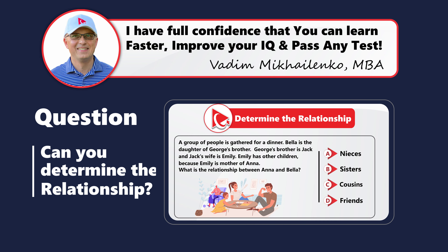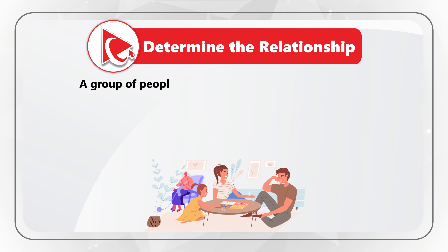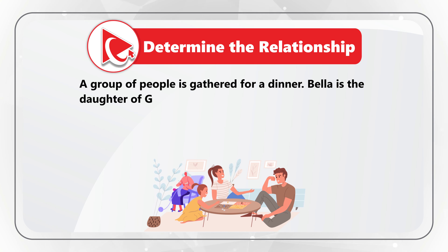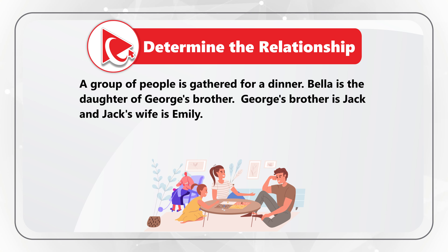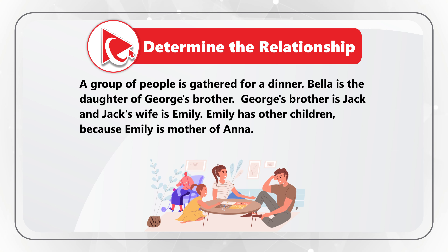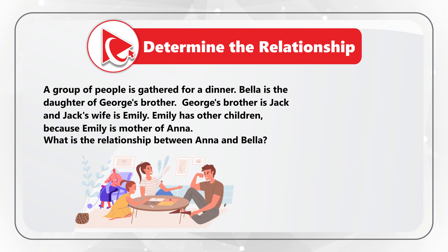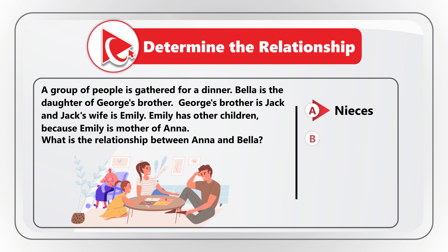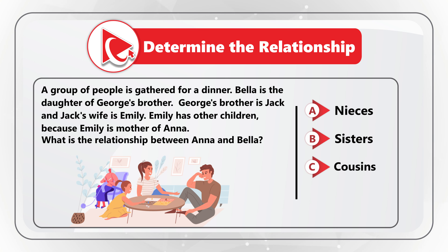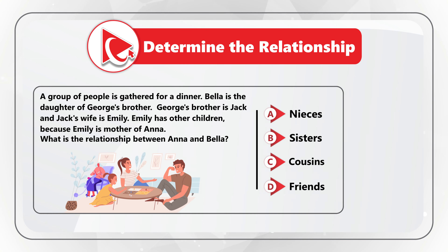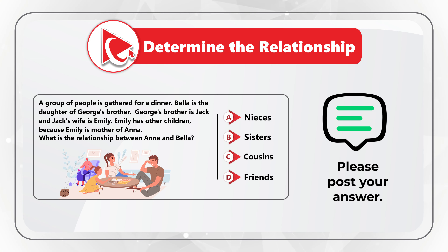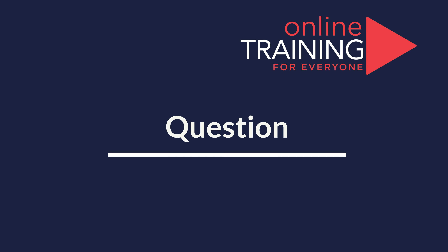Here's a question to practice your skills: you need to determine the relationship between Anna and Bella. Bella is the daughter of George's brother. George's brother is Jack, and Jack's wife is Emily. Emily is also the mother of Anna. The choices are: A — they are nieces, B — they are sisters, C — they are cousins, D — they are just friends. Pause the video and post your answer in comments.